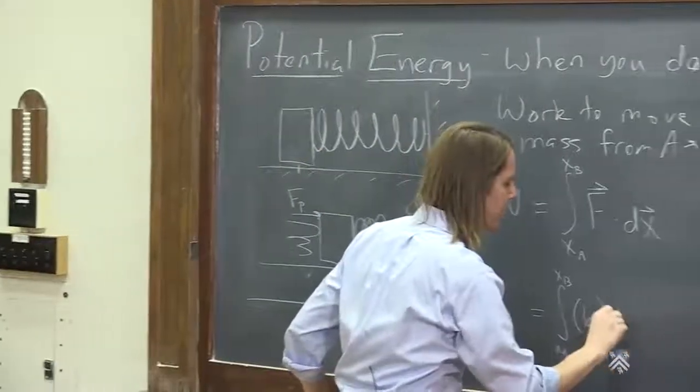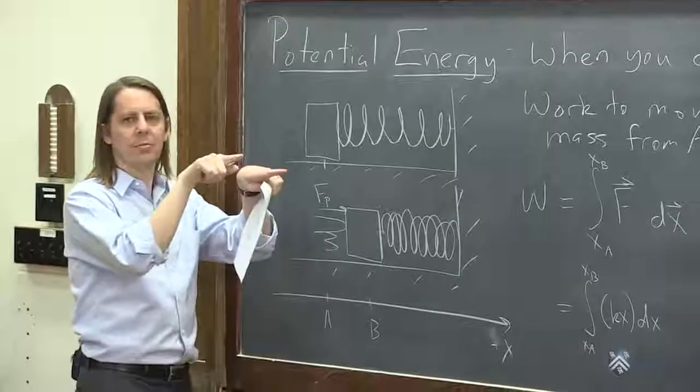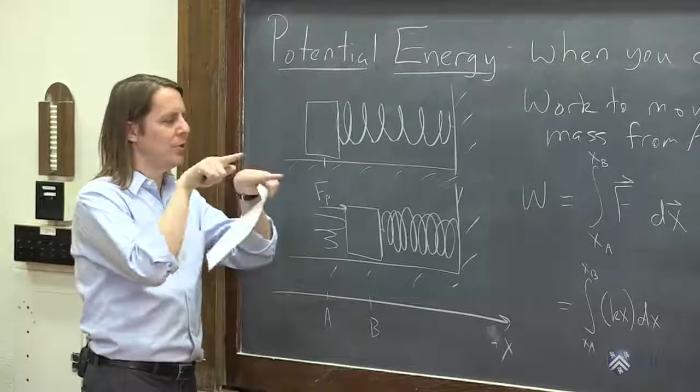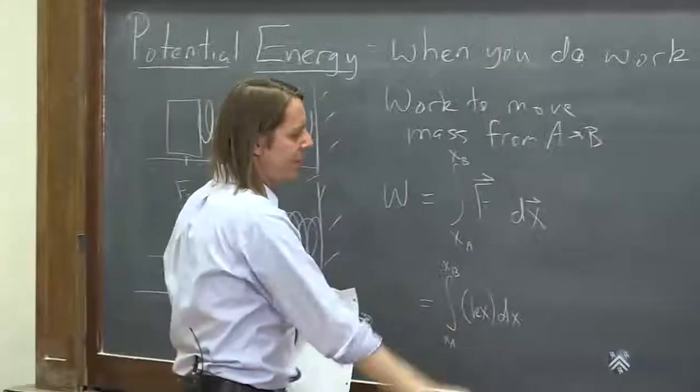And the dot product isn't there, because they're the same direction. So the angle between the force and the displacement is 0, so cosine of 0 is 1. So I've got rid of not showing the vector part at this point.